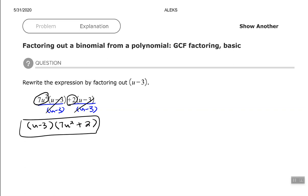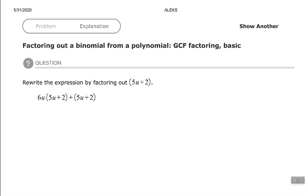Let's try one more. You may want to pause the video to see if you can figure this one out. We want to rewrite the expression by factoring out 5u plus 2. We have 5u plus 2 and 5u plus 2. That is my common binomial here. I'm going to factor that out.